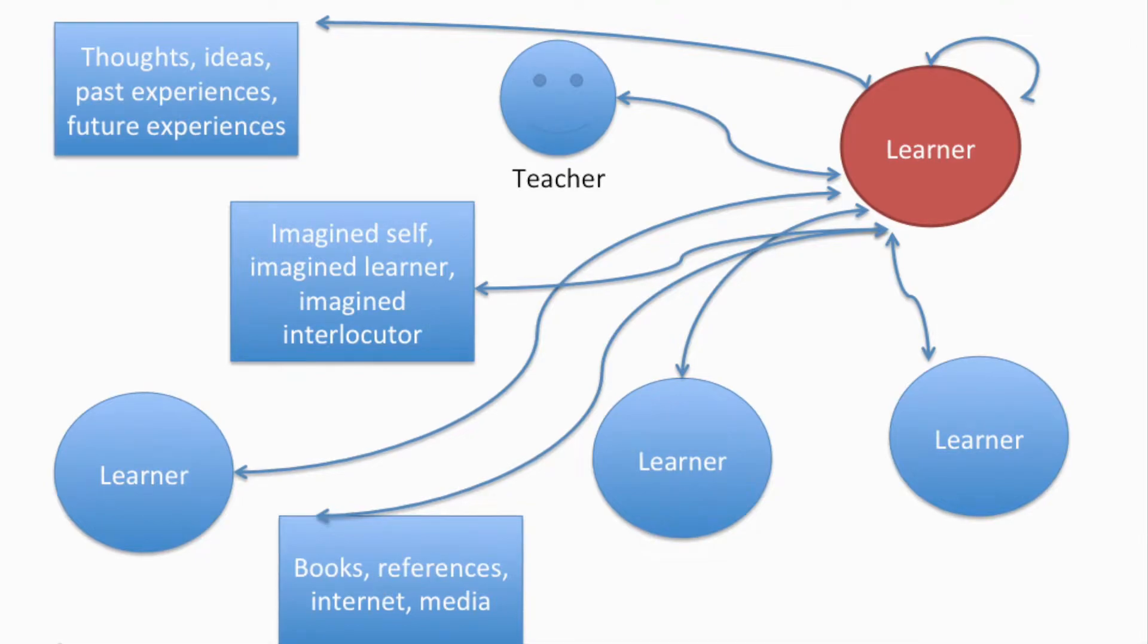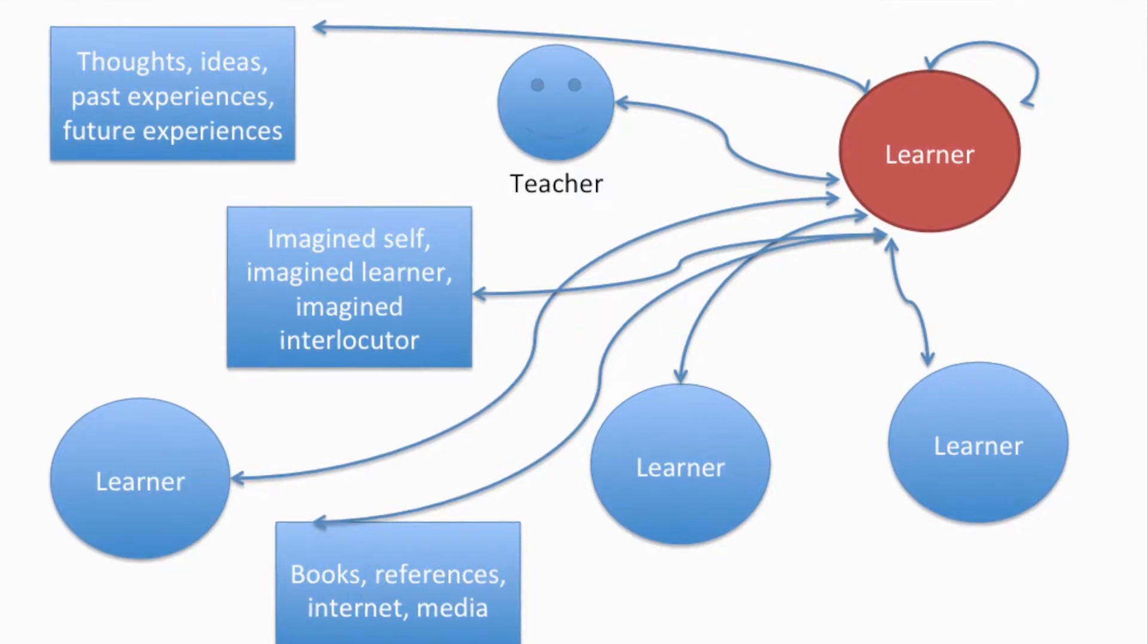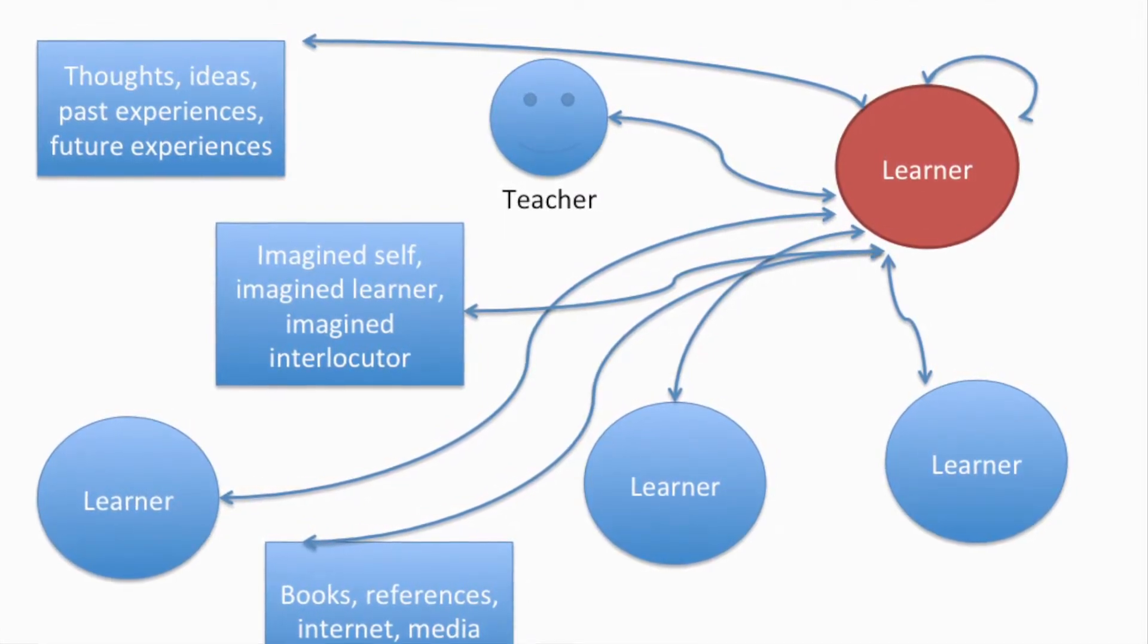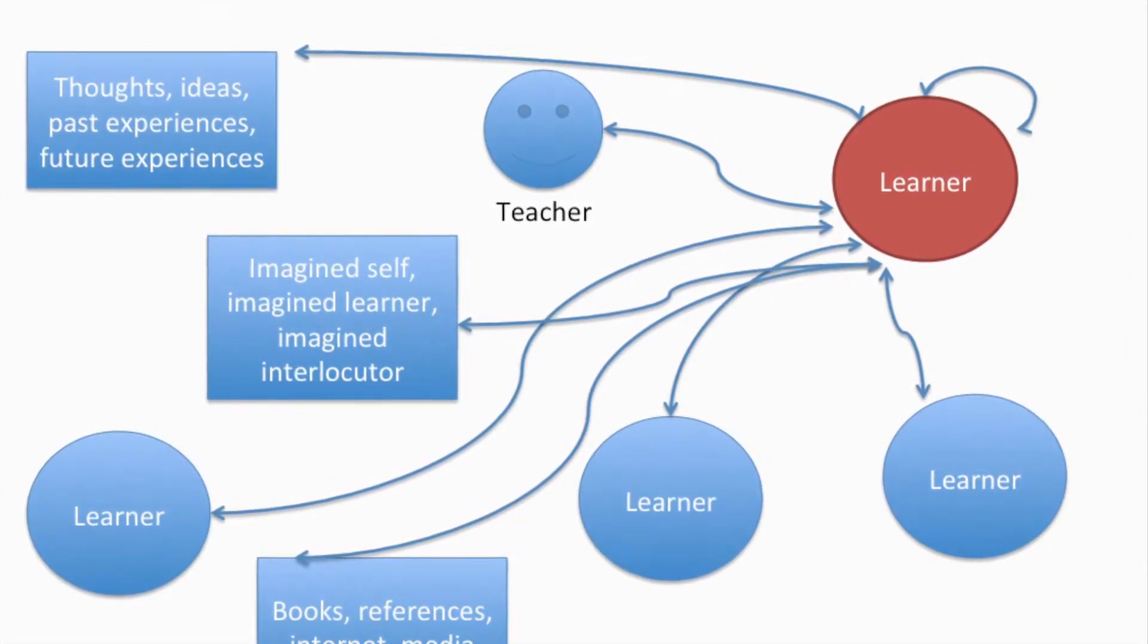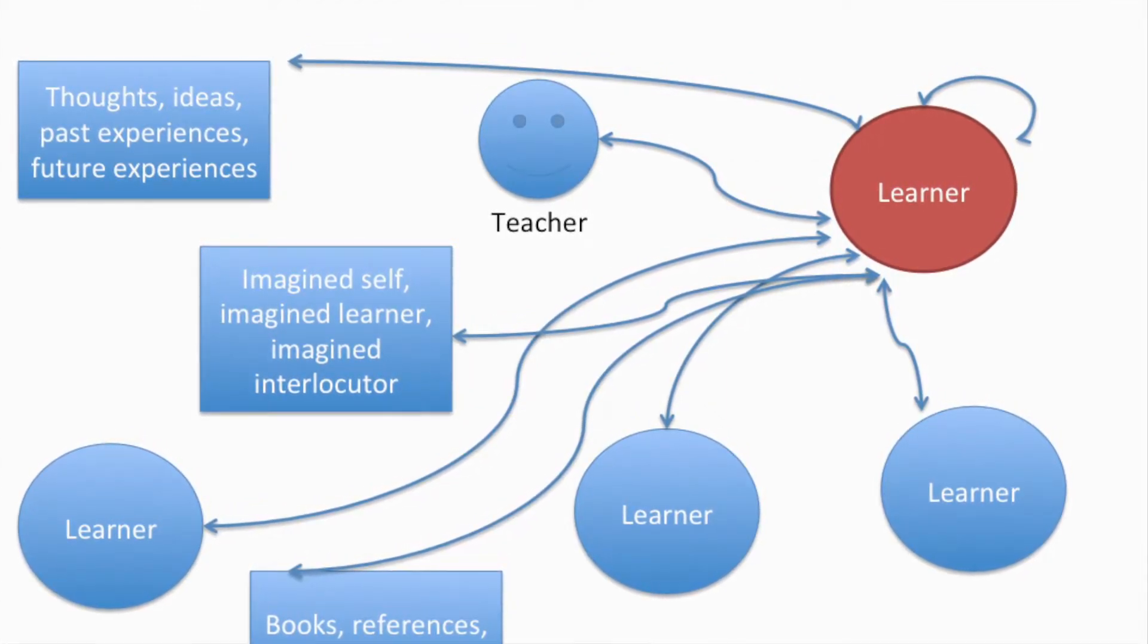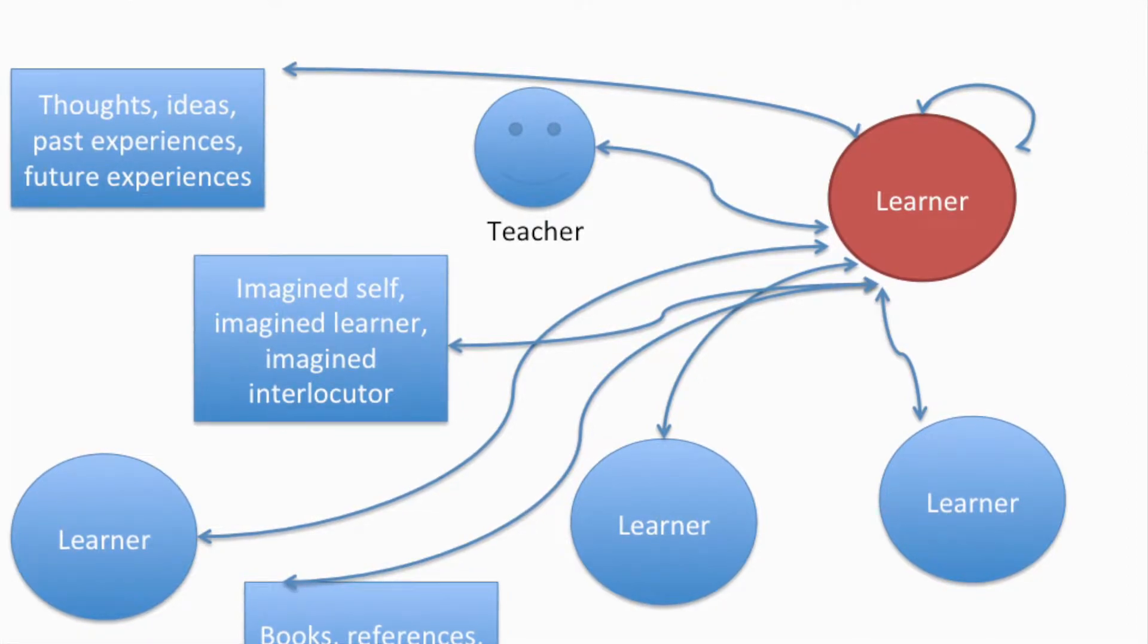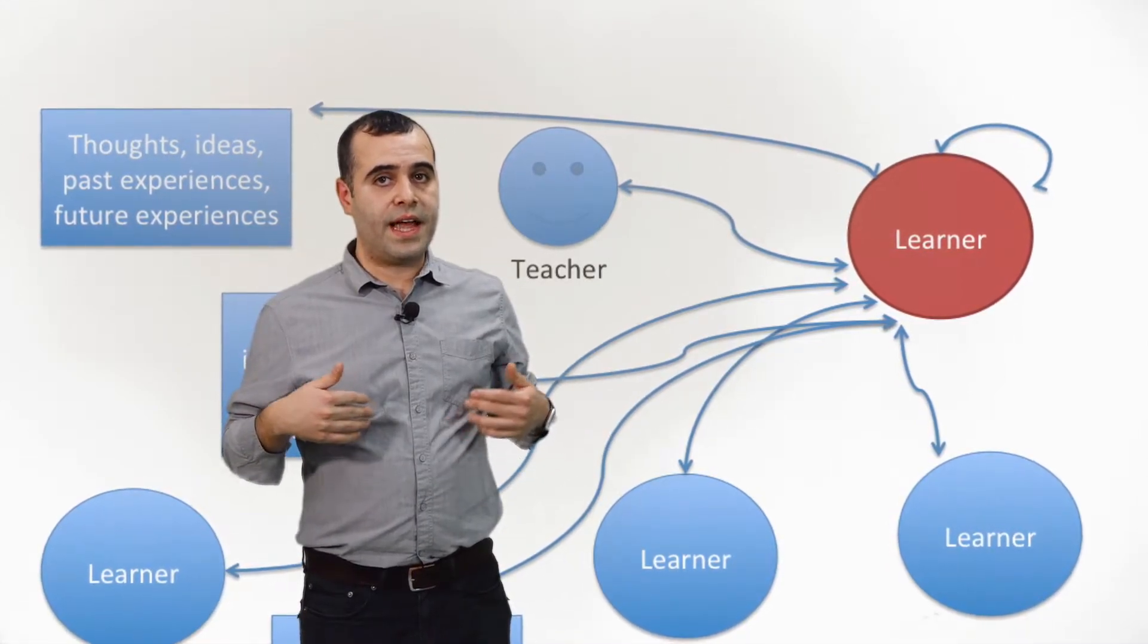If we take a look at the picture, the circle in red is an example of one learner's possible interactions during a lesson. The learner might interact with themselves, with another learner or learners, with the teacher, with resources such as books, internet, dictionaries, encyclopedias, and also with imagined people, imagined self, imagined thoughts or ideas. Through all these experiences, learning takes place and language emerges.